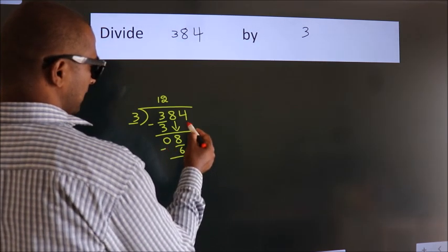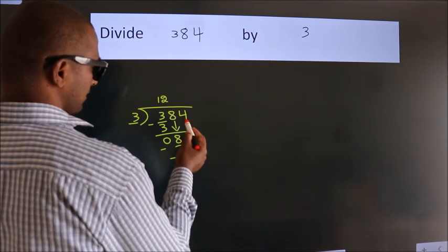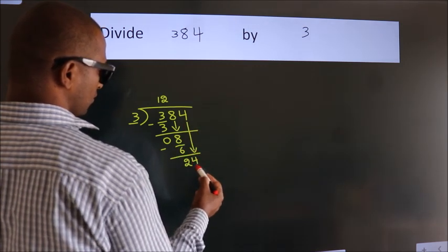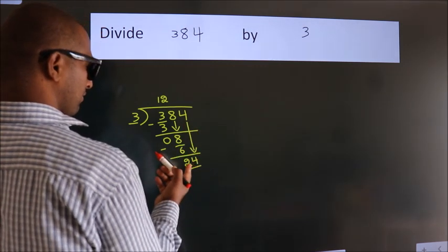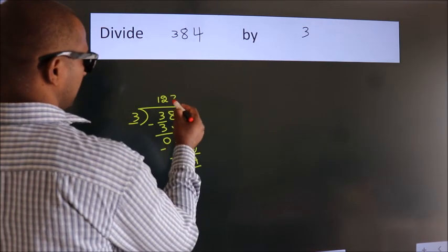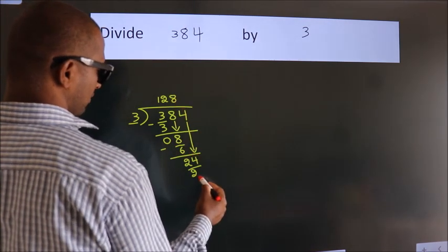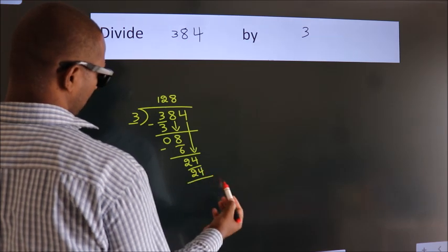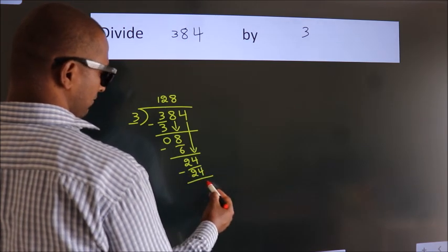After this, bring down the beside number. So, 4 down. So, 24. When do we get 24? In 3 table. 3 eights is 24. Now, we subtract. We get 0.